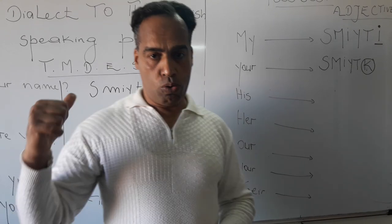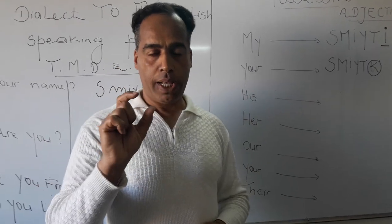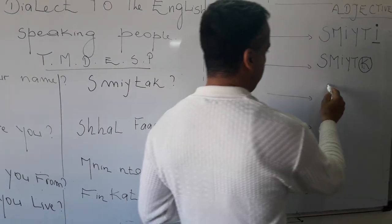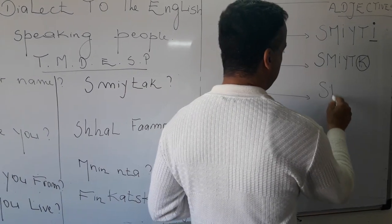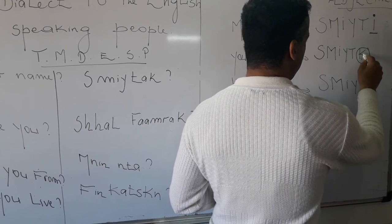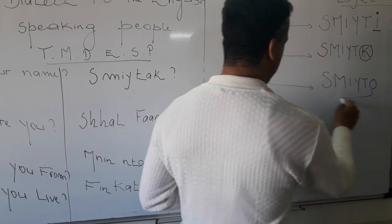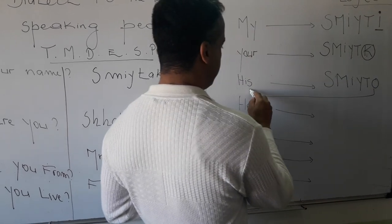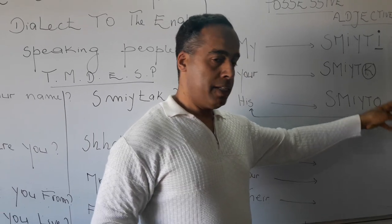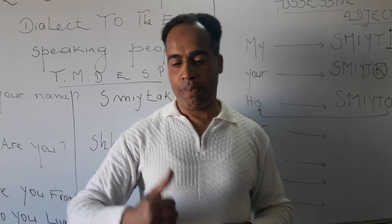Next, 'so' means 'his.' When we have the letter 'o' at the end of any word, it means 'his.' So 'smitho' means 'his name.' When you have 'o' at the end of any word in the Moroccan dialect, it means we are speaking about 'his.'